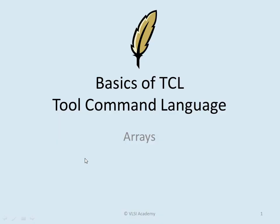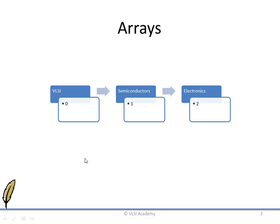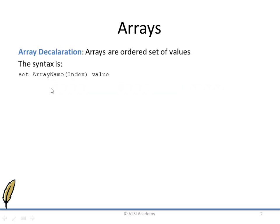Hello everyone, this is the fifth lecture and today we will learn about arrays and loops. Arrays are ordered lists of values which can be accessed by their indices. In this example, the first index stores the value VLSI, the second index stores semiconductors, and the third index stores electronics. This is a consecutive list of indices accessed by their index values. The syntax is: set, array name, then index, then value — which is very similar to what we do in C.